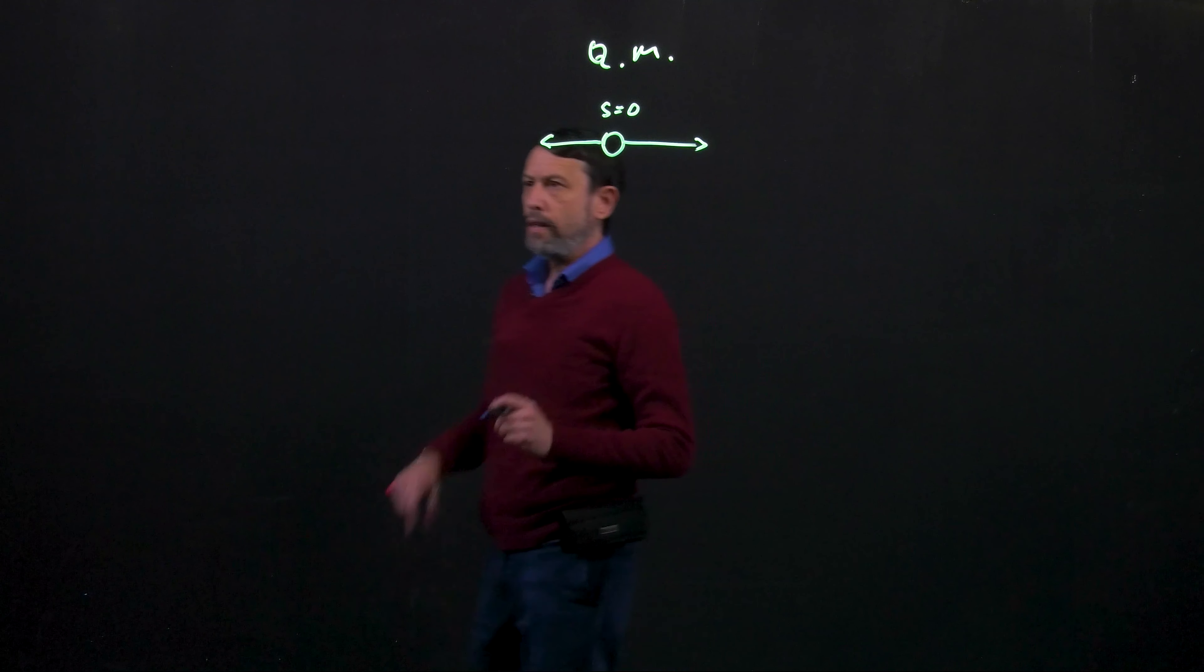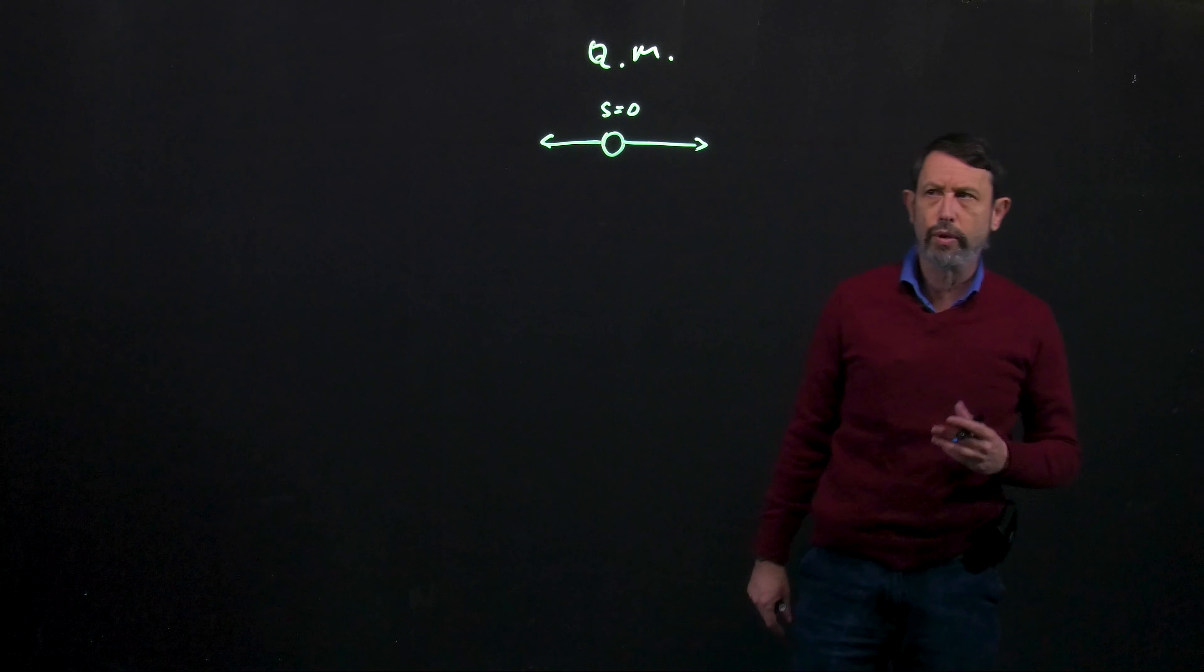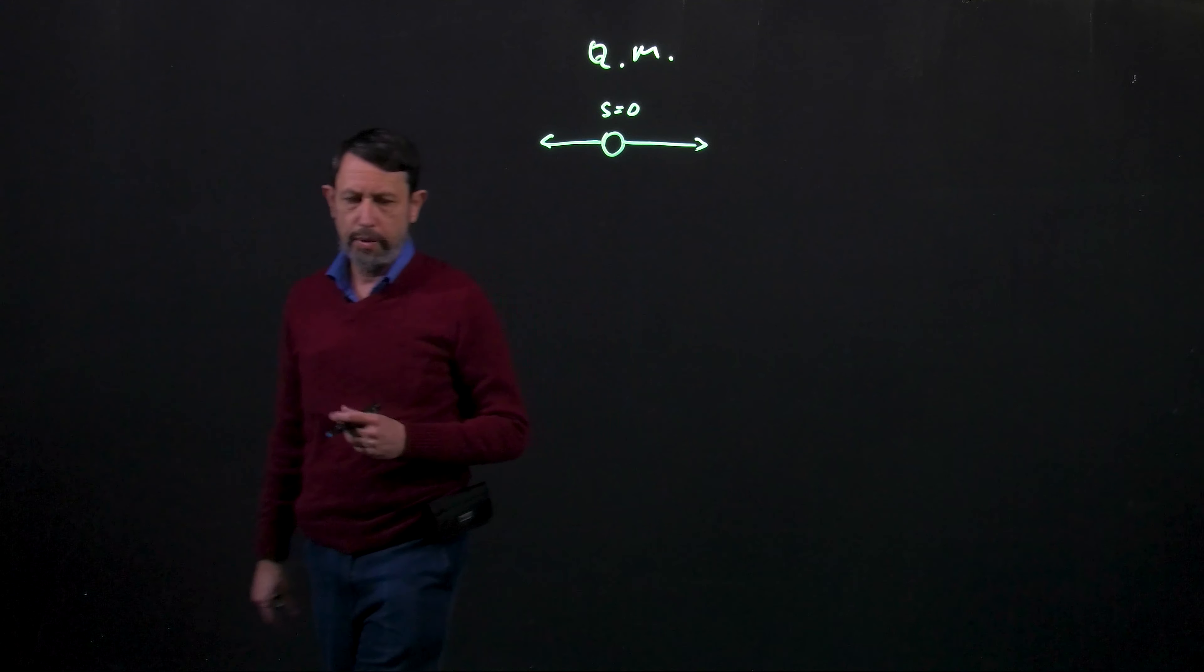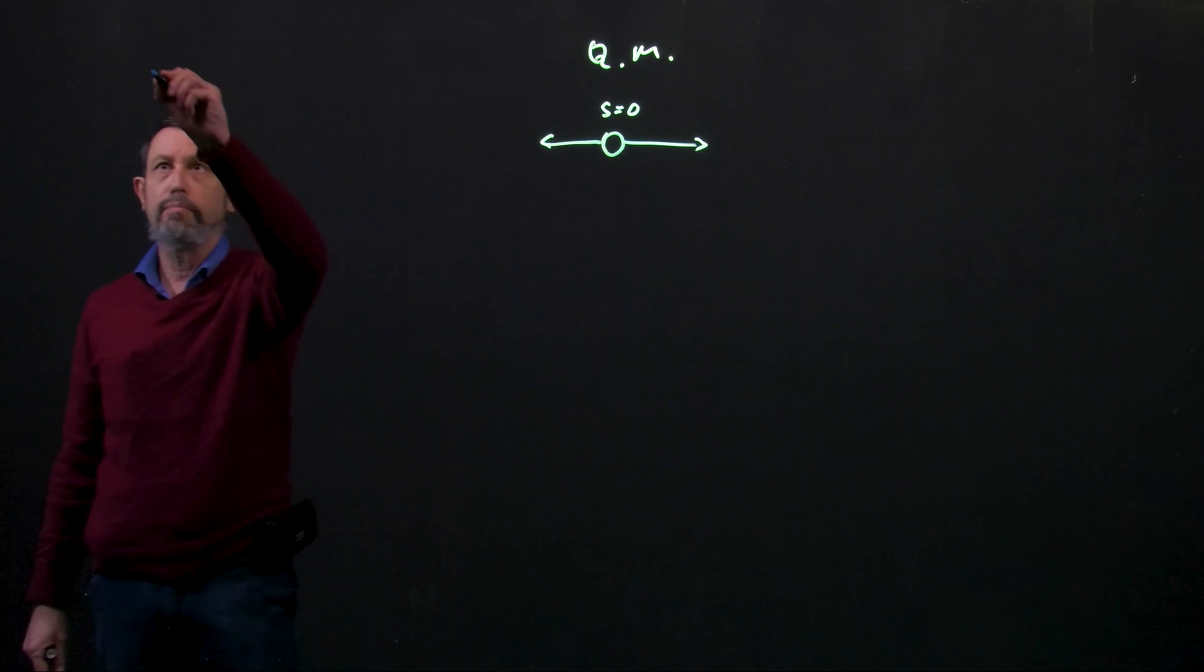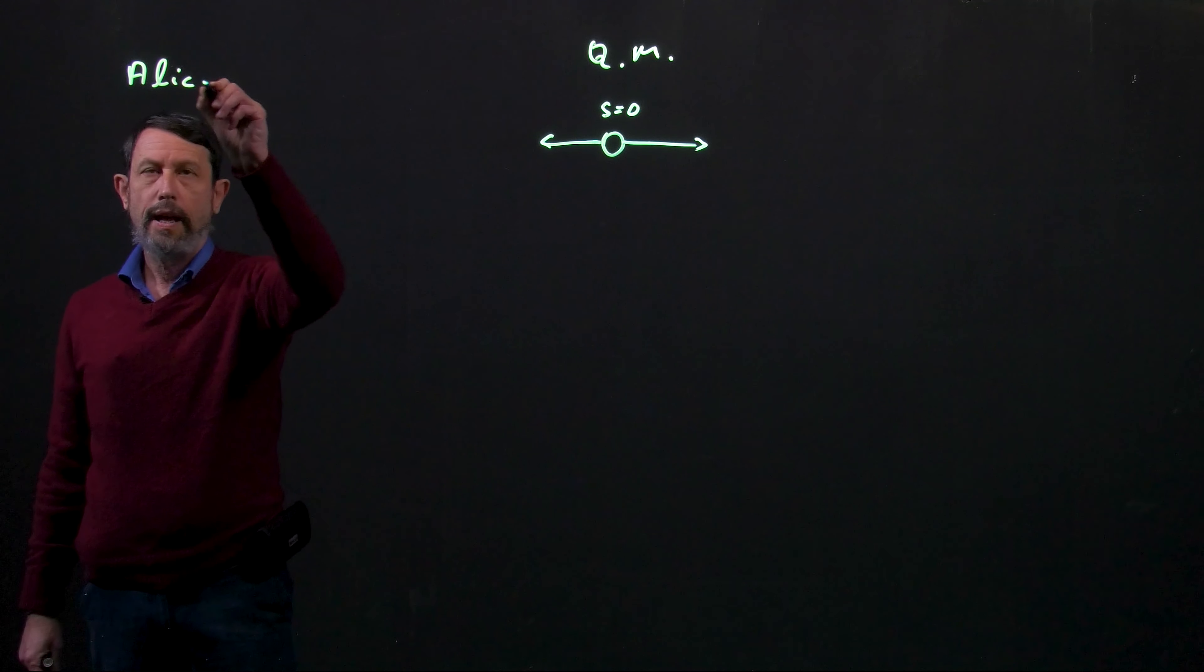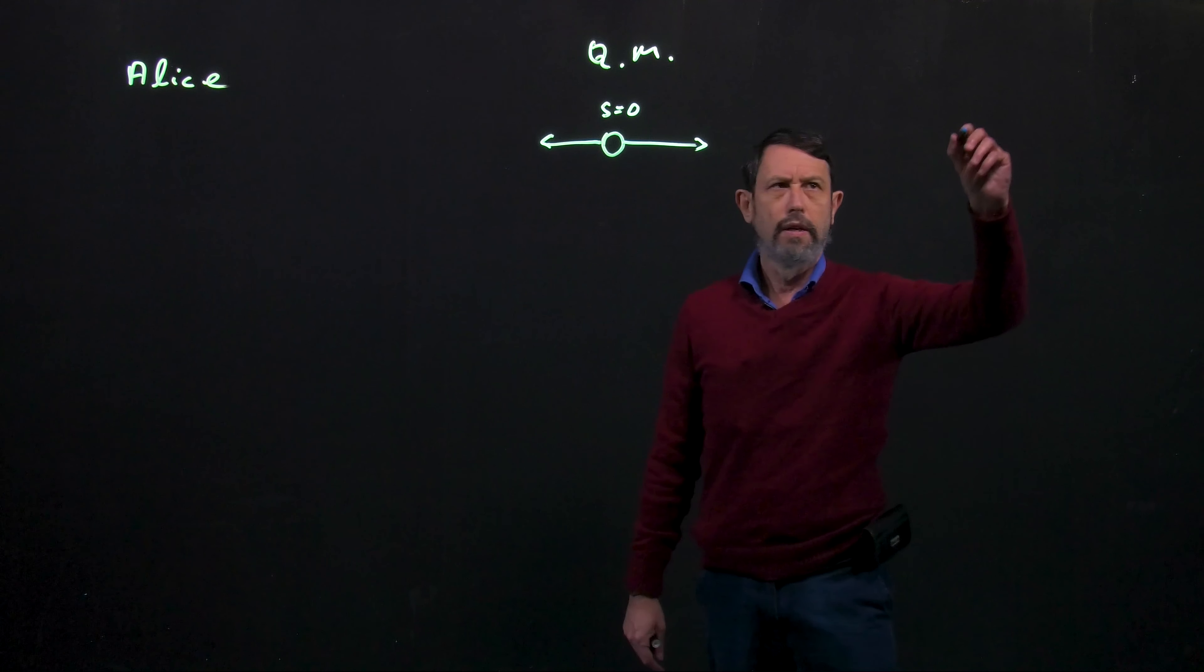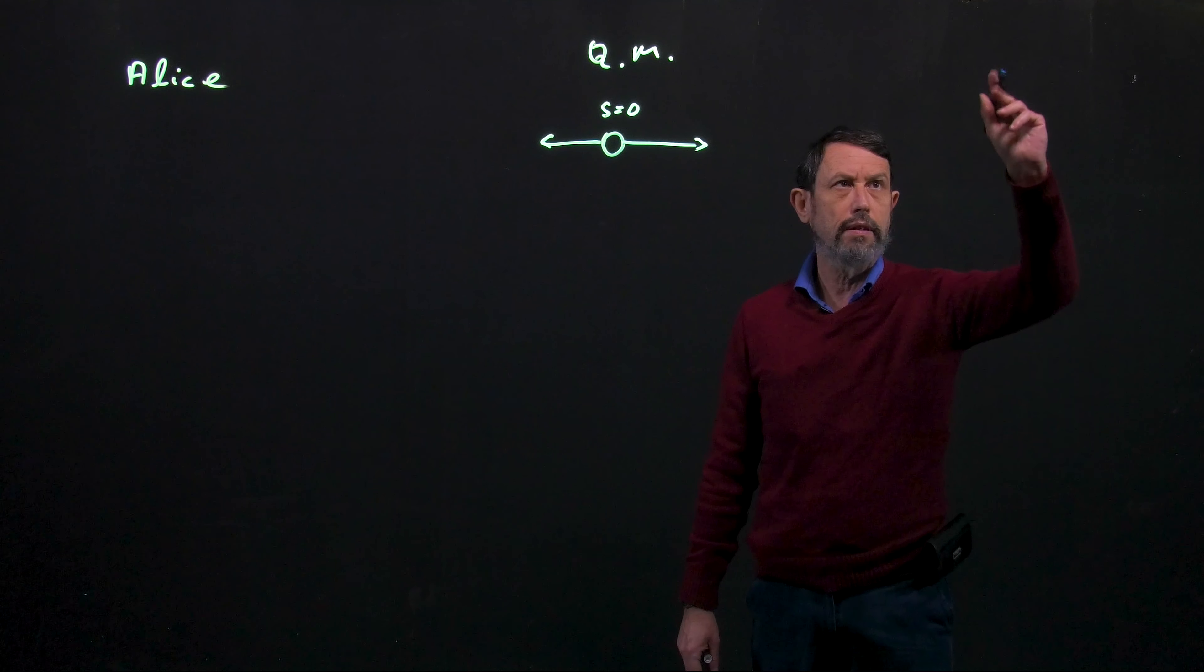In this clip we'll lay down the groundwork, the mathematical groundwork, in order to calculate the correlations between the measurements of the two experimentalists Alice and Bob and see how it compares with the classical results which we have obtained in the previous clip.